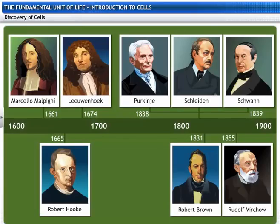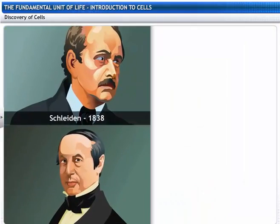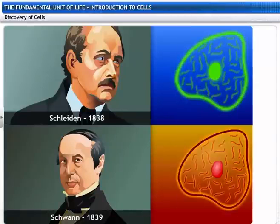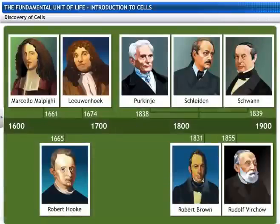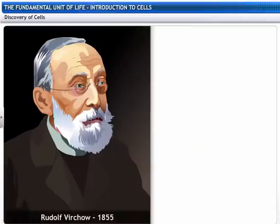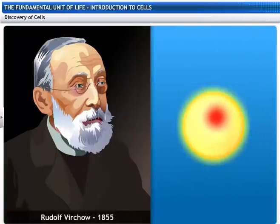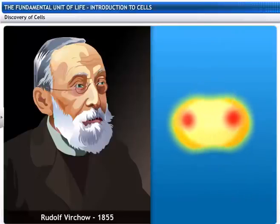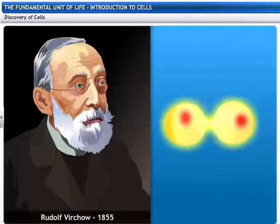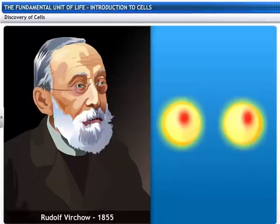Two biologists, Schleiden in 1838 and Schwann in 1839, proposed the cell theory that all plants and animals are composed of cells. Rudolf Virchow, in 1855, further expanded the cell theory by saying "Omnis cellula e cellula," which means all cells arise from pre-existing cells.